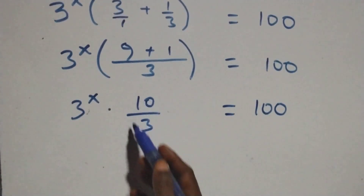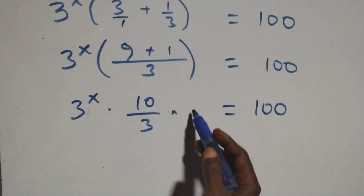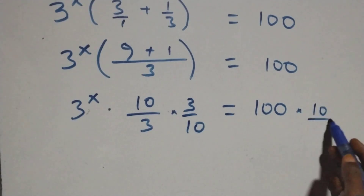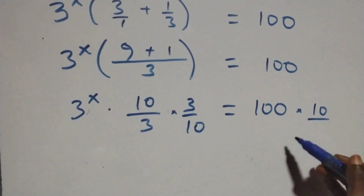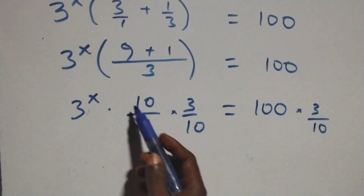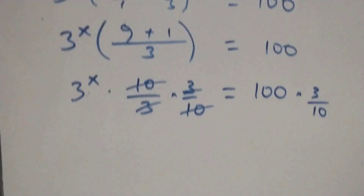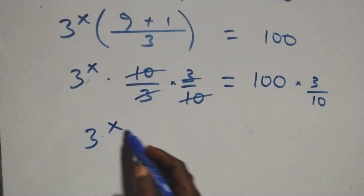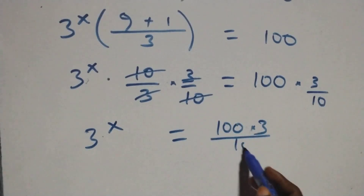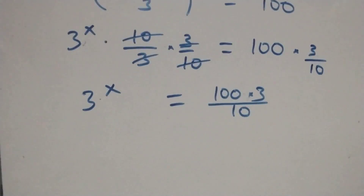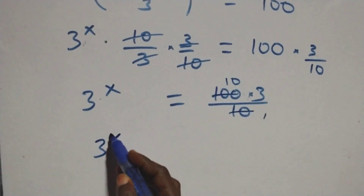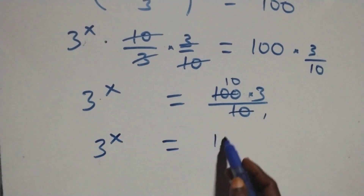The next step we remove this 10 over 3 and multiply both sides by 3 over 10, and just multiply this side as well by 3 over 10. We have 3 over 10, and this here cancelled each other. Then all we have becomes 3 raised to power x equals to 100 times 3 over 10. That is 10 goes into 100 ten times, and we have 3 raised to power x equals to 10 times 3.